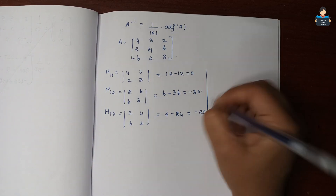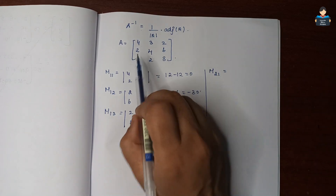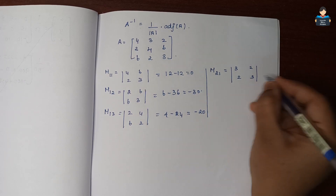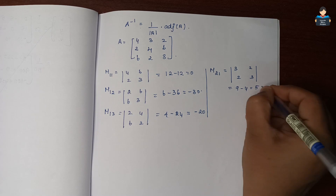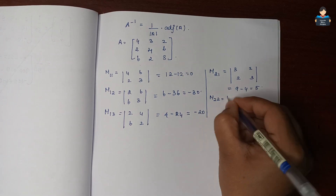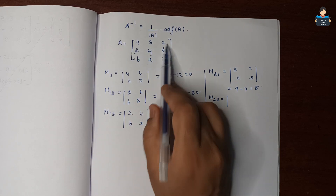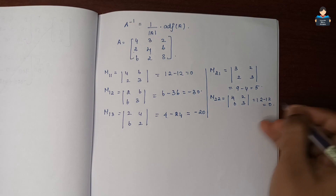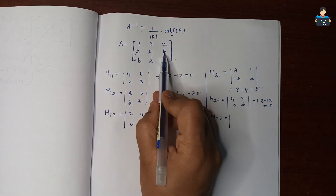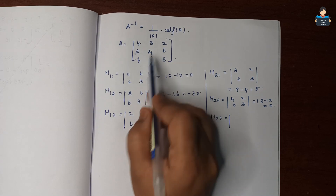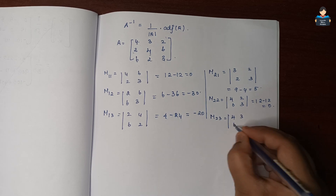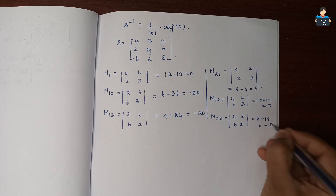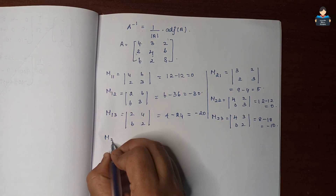Second row minors: M21: remove row 2, column 1 → |3, 2 / 2, 3| = 9 − 4 = 5. M22: remove row 2, column 2 → |4, 2 / 6, 3| = 12 − 12 = 0. M23: remove row 2, column 3 → |4, 3 / 6, 2| = 8 − 18 = −10.